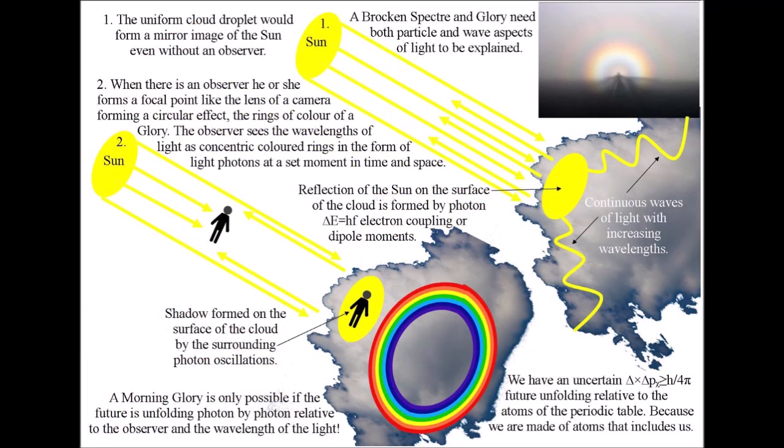We have two diagrams here, one without an observer and one with an observer. It seems logical that we would have a mirror image of the sun even without an observer. I say this because when I was observing, I found that I could walk away and the brocken spectre disappeared as the geometry was broken, but it seemed like I was walking out of the line of sight of the sun's reflection, not that the sun's mirror image disappeared because there was no observer.